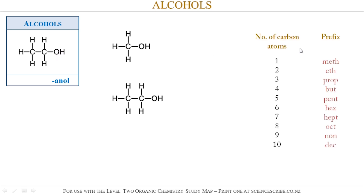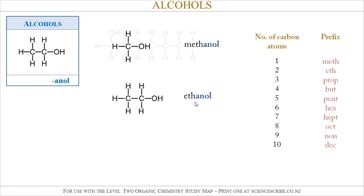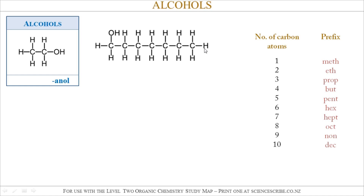If we were to try to name these alcohols, I would consult the table. In the first example, this alcohol has a longest carbon chain of just one carbon atom, so that corresponds to 'meth'. In the second example, this molecule has a longest carbon chain of two carbon atoms, so that corresponds to 'eth'. All alcohols have the ending '-anol', so the first example is methanol and the second is ethanol. Another example: a longest chain of seven carbon atoms corresponds to 'hept', with the alcohol functional group on the first carbon atom, giving heptan-1-ol.